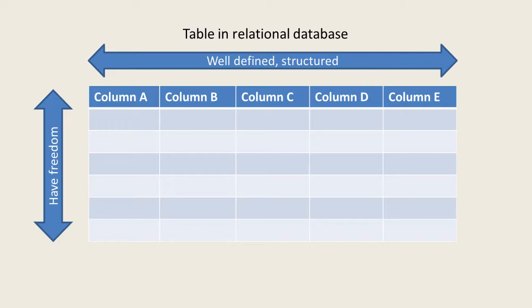Vertically, you have pretty big freedom — you can have many records, few records, just one record, more than a million records, or even zero records. An empty table will not store anything, but it will be a perfect relational table and could be used as part of some queries as well — at least it's not going to throw any error or exception.